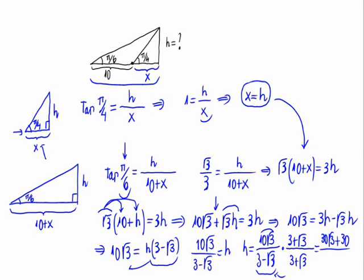The denominator would be 9 minus 3, so 30 times the square root of 3 plus 30 divided by 6. That is, 5 times the square root of 3 plus 5. That would be the result of the height of the tree.